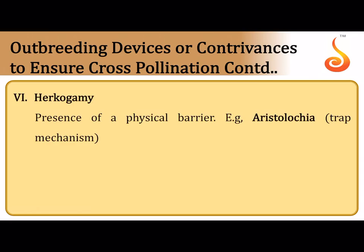Herkogamy is a physical barrier preventing self-pollination. In Aristolochia, once an insect enters a young protogynous flower, it cannot exit until it deposits pollen carried from an older flower onto the stigma, and it is trapped until it picks up pollen from that flower — this is called the trap mechanism.